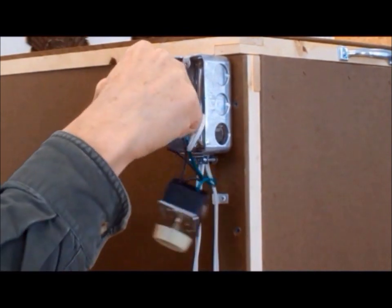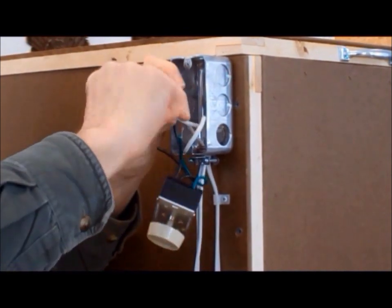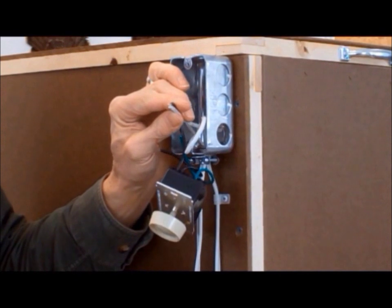Using wire nuts, connect the two black wires coming out of the dimmer switch to each of the wires you have just stripped.